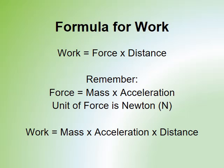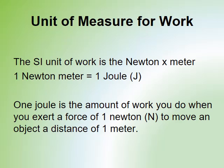The formula for work is force times distance. Remember that force equals mass times acceleration from Newton's second law, and our unit for force is the newton. So work can also be thought of as mass times acceleration times distance. Our unit for work is a newton-meter, because force is in newtons and distance is in meters. We give that a new name called a joule — spelled J-O-U-L-E, written as a capital J. A joule is the amount of work done when you exert a force of one newton to move an object a distance of one meter.